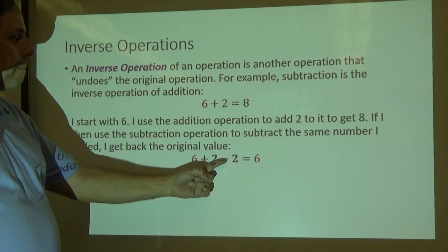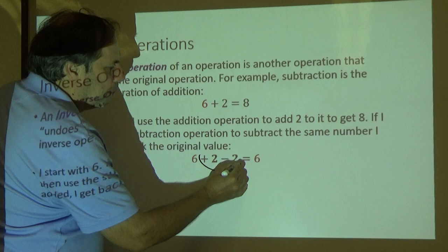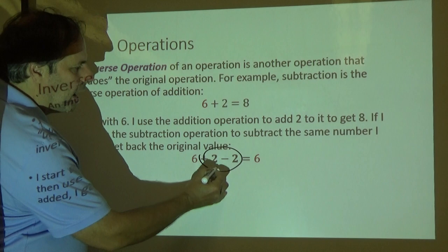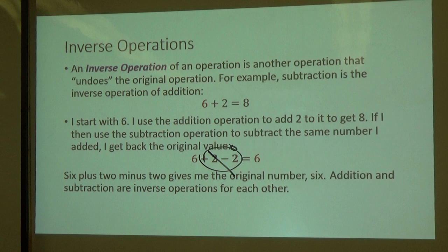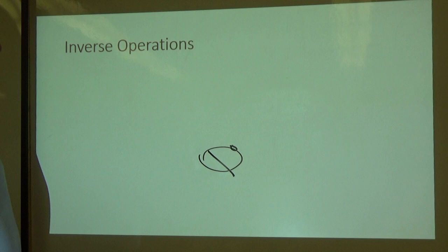Six minus, or six plus two minus two. We can see that these two twos, plus two and minus two, those turn into zero. Those go away and turn into zero. And we get back to six. We get back to our original value. So that means that addition and subtraction are inverse operations. Because I can add two and subtract two, and they undo each other.